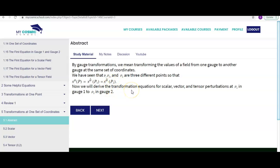So now we will derive the transformation equations for scalar, vector, and tensor perturbations at point P1 in gauge 1 to P2 in gauge 2. So what do we mean by P1 in gauge 1 to P2 in gauge 2? This means that we are going to derive the transformation equations at the same set of coordinates.